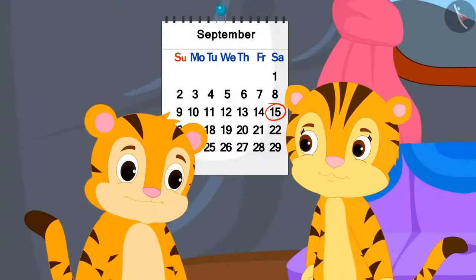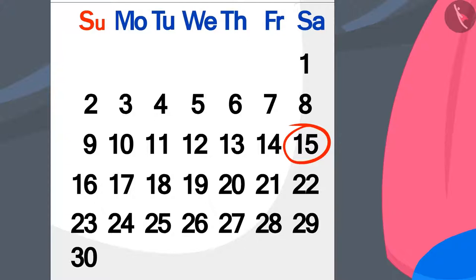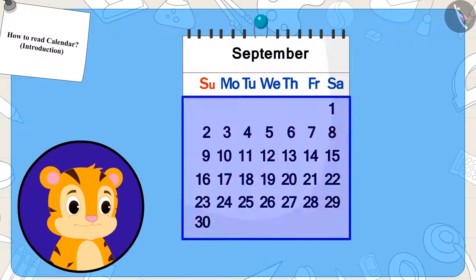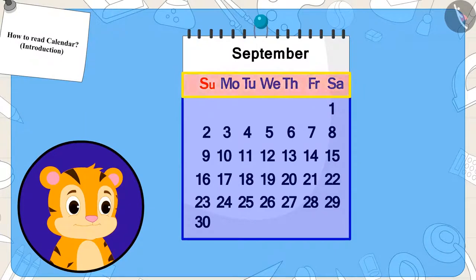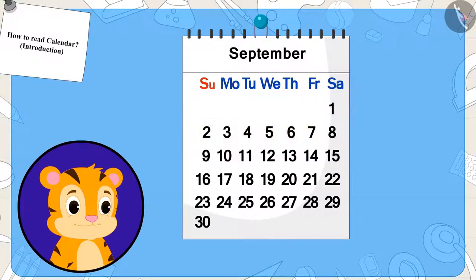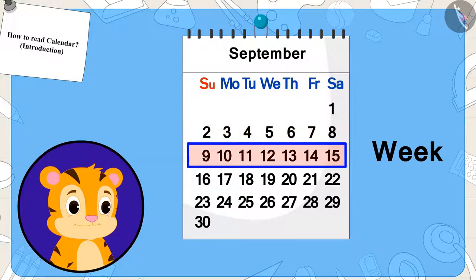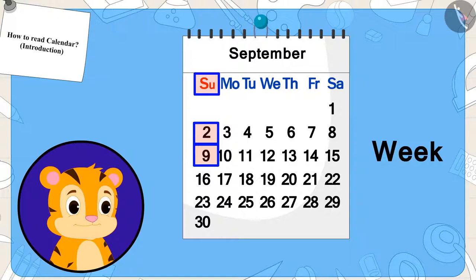Sher Khan's mother showed him the date of the magic game on the calendar. Sher Khan started thinking that days were written in this way in the month, but he could not understand why only the names of the days were written above. Do you know the reason? Because one week is made by adding seven days, the second week starts from the same day, and so the names of the days are written only above.